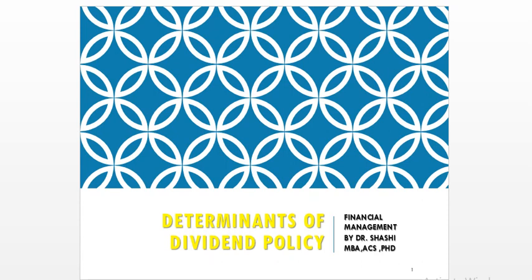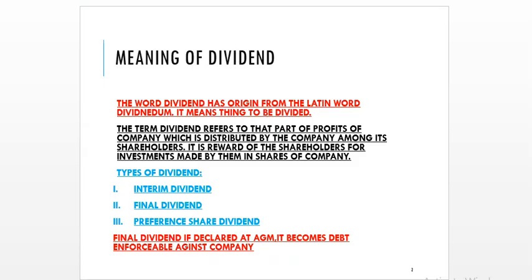Under financial management, our topic is determinants of dividend policy — what are the factors which influence the dividend. First, we will see what is the meaning of dividend. Dividend has its origin from the Latin word 'dividendum,' meaning 'things to be divided.' Dividend refers to that part of the profit of the company which is distributed among the shareholders.